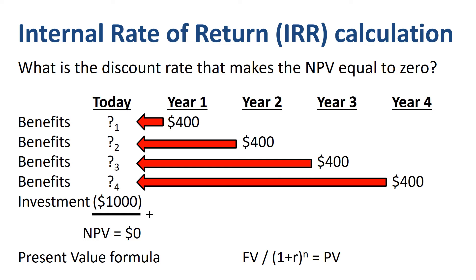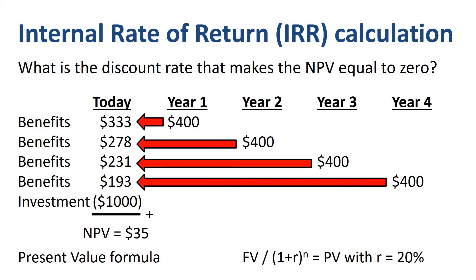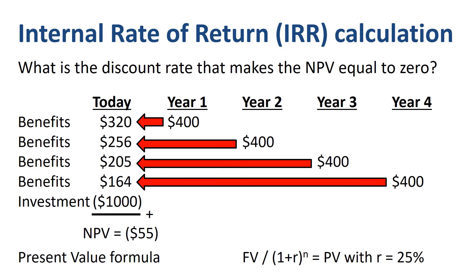In the earlier example, we saw that a 20% discount rate gives us an NPV of $35. So that discount rate is too low, as the NPV is a positive number higher than zero. Let's try with a discount rate of 25%. Now our NPV is negative $55. So that discount rate is too high, as the NPV is lower than zero.